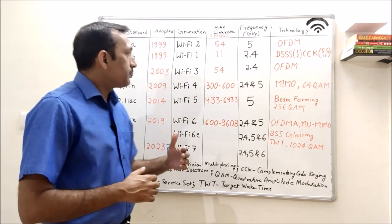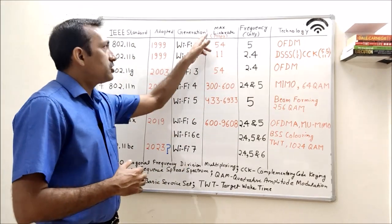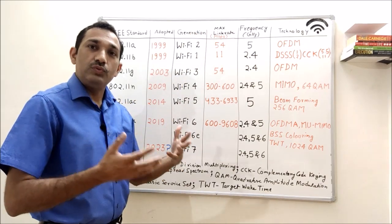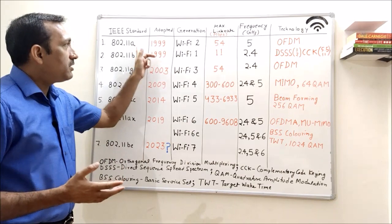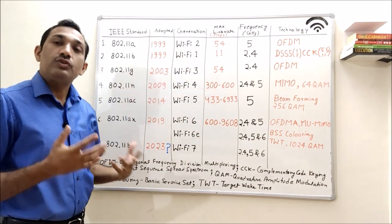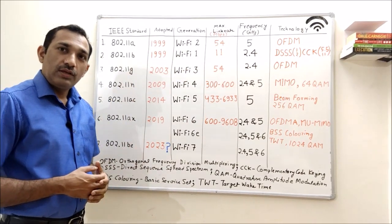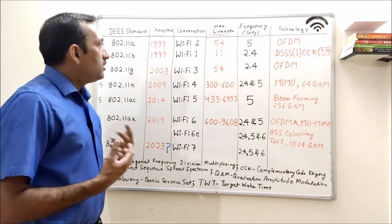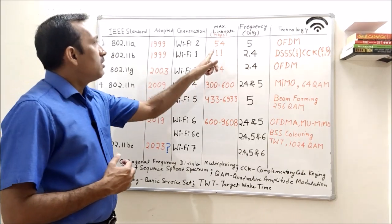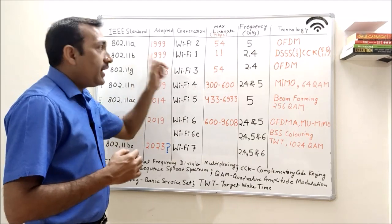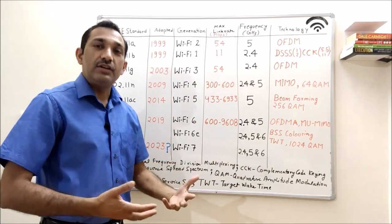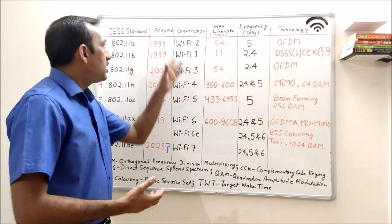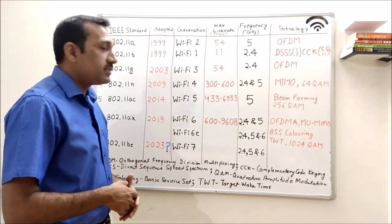Now, the question is when we started generation naming - Wi-Fi 1, 2, 3 - it looks like 11A was first, but if we see, the name is Wi-Fi 2. To me, the reason for this looks like because 11B had lower data rate, and when we increase in generation, data rate goes up. Both came in the same year, so probably that is the reason.